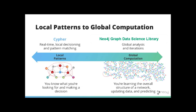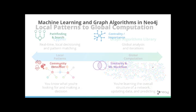So there's a lot of different types of analysis you might do with the graph algorithms that are, as I've said, more global. With the cipher, you're looking at more local and real time pattern matching.